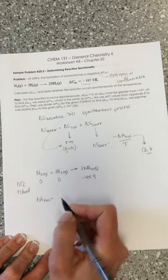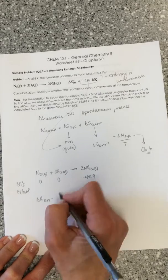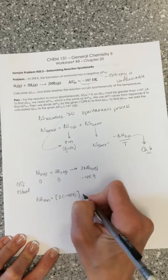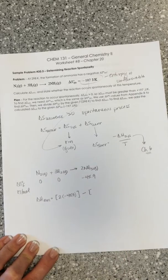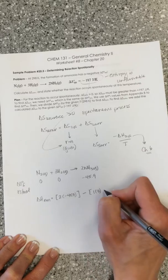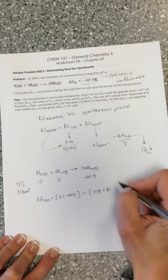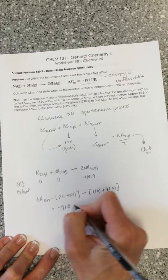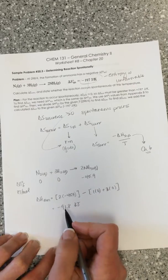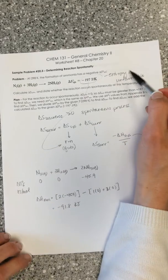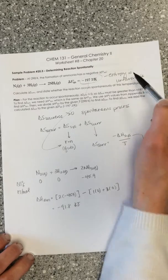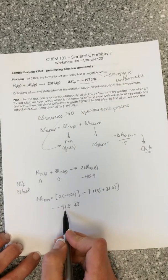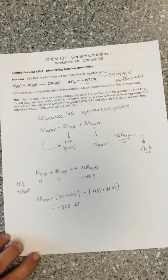Looking at delta H of our reaction, it's products minus reactants. The only product is 2 times minus 45.9 kilojoules per mole. We subtract the sum of the reactants: 1 mole of nitrogen gas with delta Hf of zero, and 3 moles of hydrogen gas with delta Hf of zero. So mathematically the reactants don't contribute, and we end up with a value of minus 91.8 kilojoules. A negative delta H is an exothermic reaction, and that's going to help compensate for the fact that the entropy for this reaction is unfavorable.